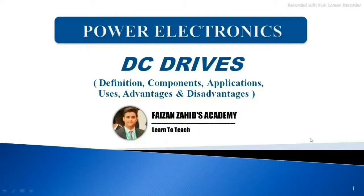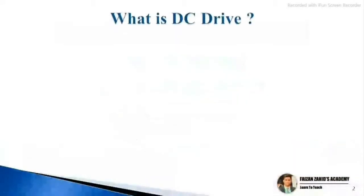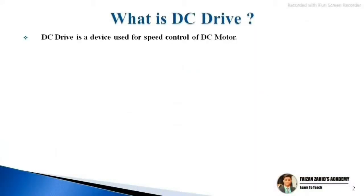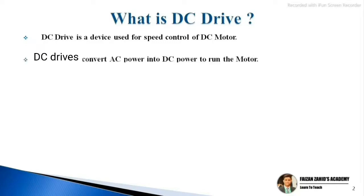What is a DC drive? A DC drive is a device used for speed control of a DC motor. The device which is used for the speed control of a DC motor is known as a DC drive.